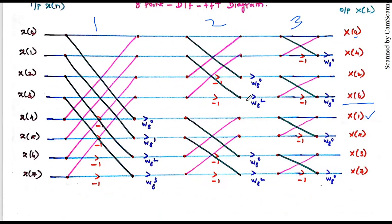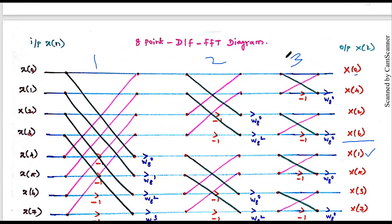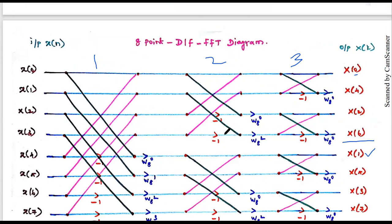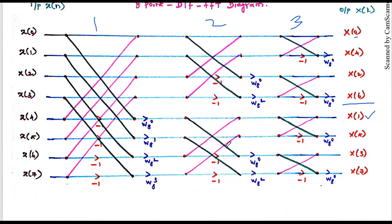This is an important exam question — draw and label the eight-point Decimation in Frequency FFT butterfly diagram. This is an eight-mark question asked in Anna University exams. Thanks for watching. Please subscribe to my channel for more videos. In the next video, using this eight-point DIF FFT diagram, we will solve one problem.